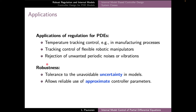The robustness of the control law gives us a very valuable property: we don't need to have a very exact model, but instead our controller will still work under some modeling uncertainty or changes in the system parameters. It also allows us to reliably use approximations when designing the controller parameters.